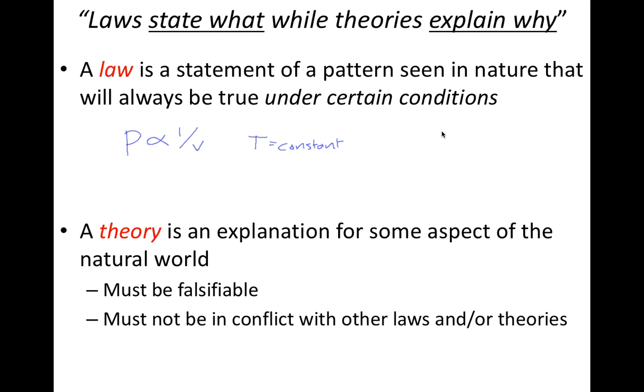A useful theory must not be in conflict with other laws or other theories. If two scientific theories are in conflict, that means that at least one of them cannot be true. Generally, theories are going to include laws. For example, the kinetic theory of gases explains Boyle's law that I just described, using the idea that gases are made up of tiny molecules that are in constant motion. That idea explains the observation contained in Boyle's law.